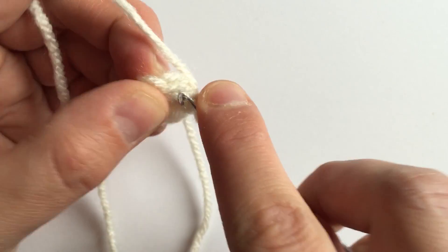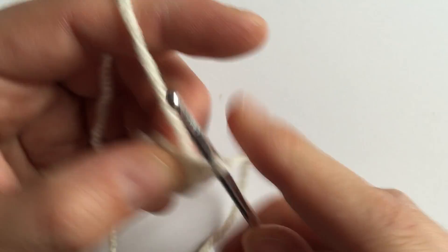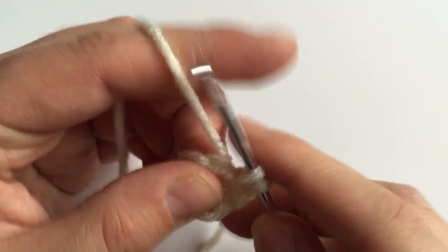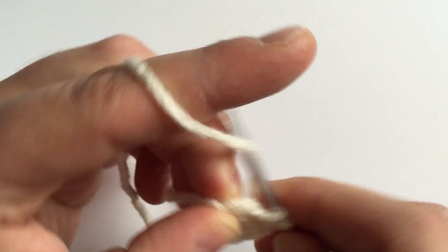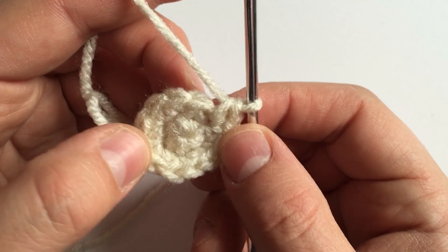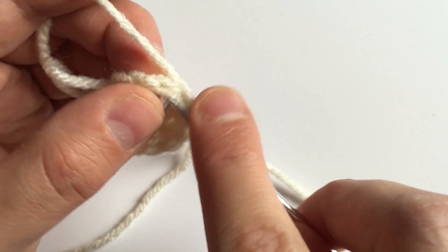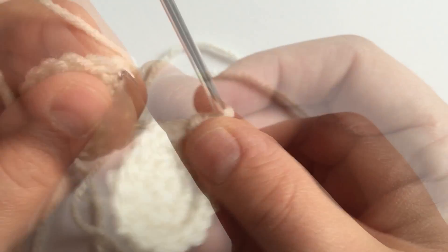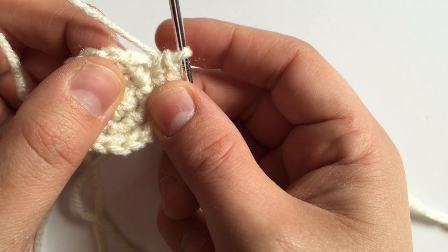Single crochet in each stitch for a total of 12 going across. Then single crochet and increase six times for a total of 18.